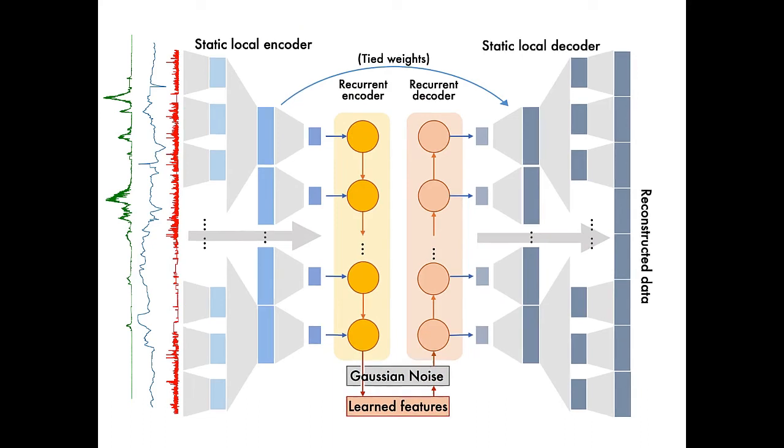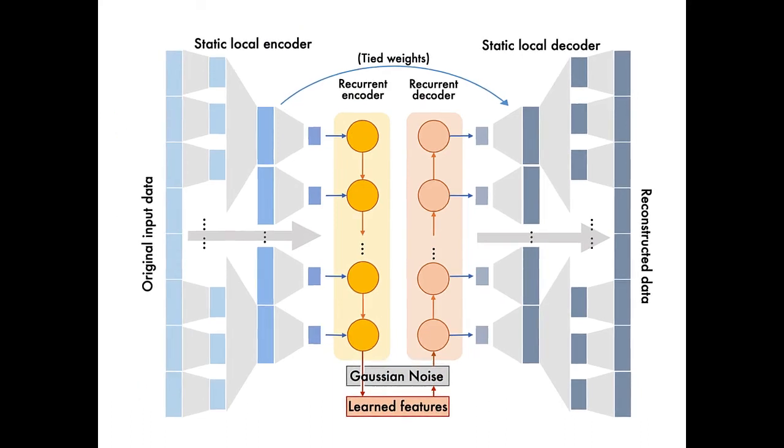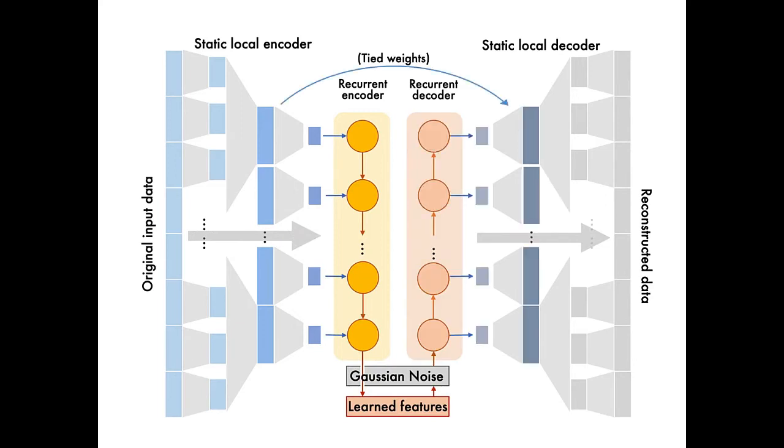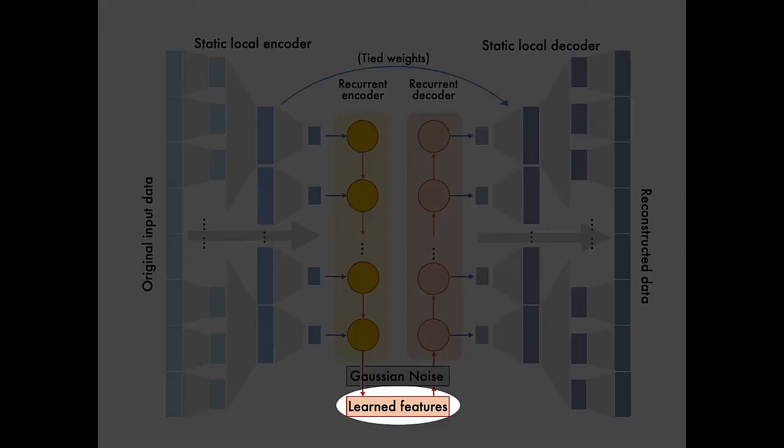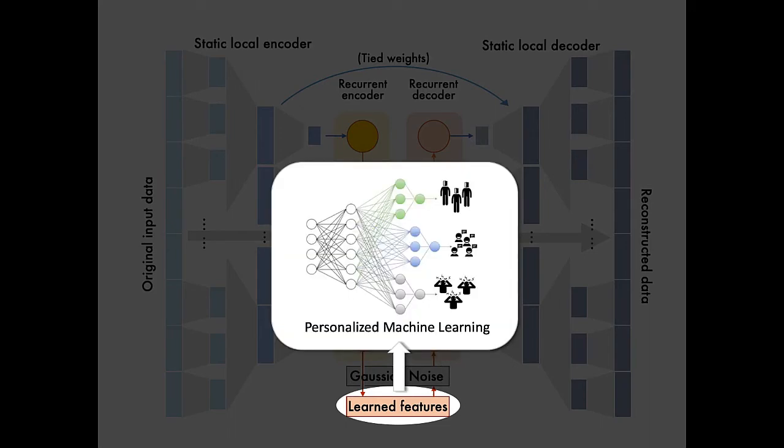Then our autoencoder-based representation learning model will automatically learn features from the raw data. Using the learned features, we applied personalized machine learning to produce predictions of users' subjective mood, health, and stress with higher precision.